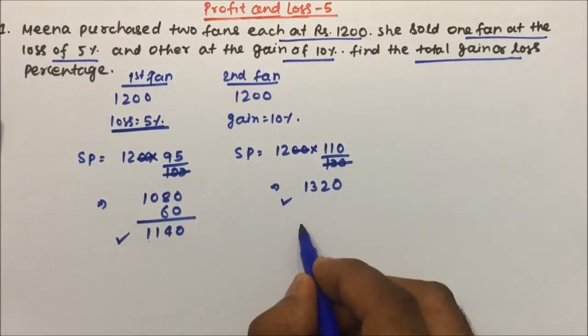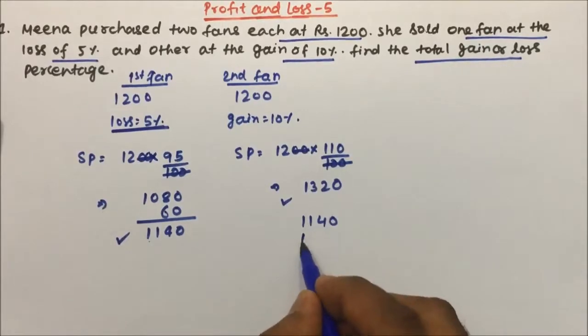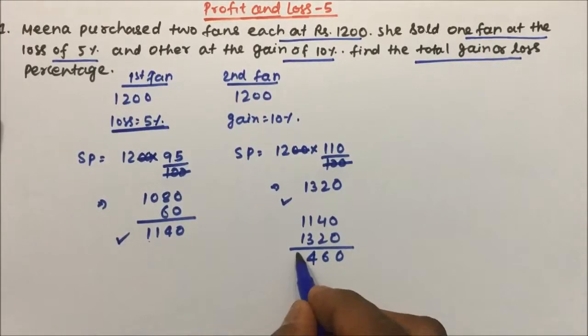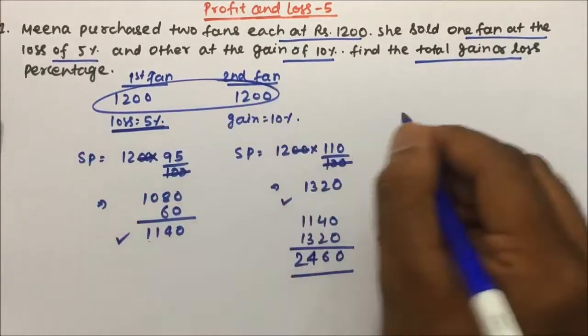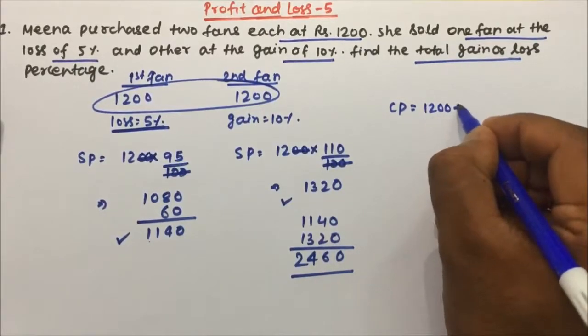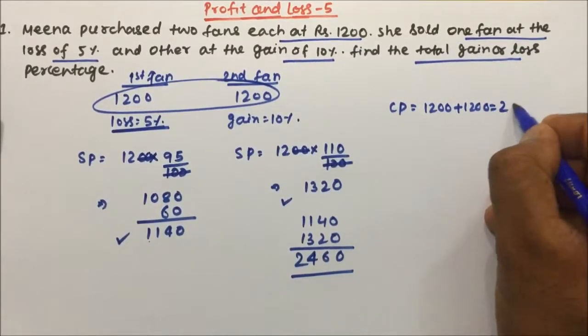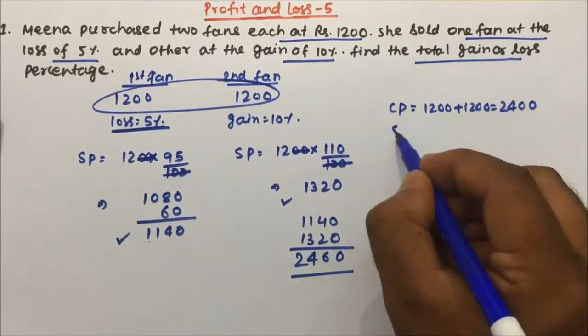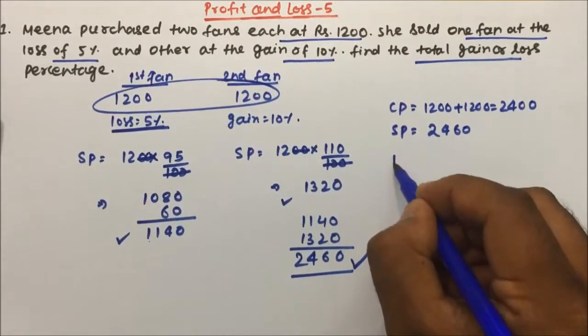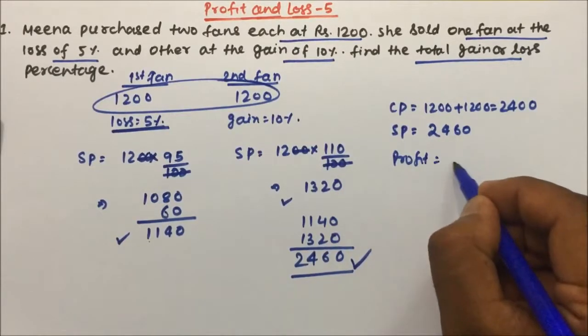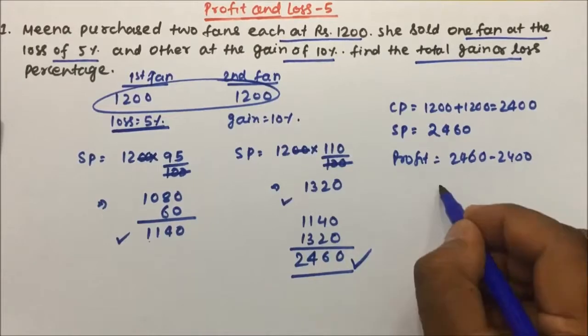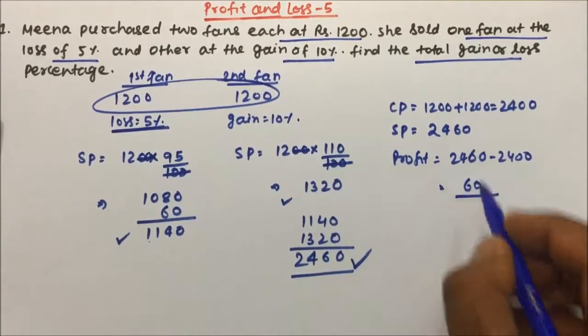Now we will add it. So if we add it will be 2460. So total amount she has invested is 1200 plus 1200 which is 2400, and on total amount she is selling for 2460. So basically what is the profit? Profit is 2460 minus 2400 which is 60 rupees and the cost price is 2400.